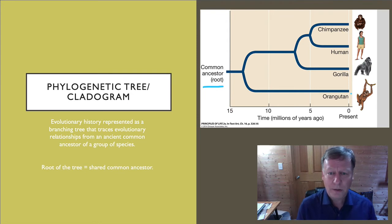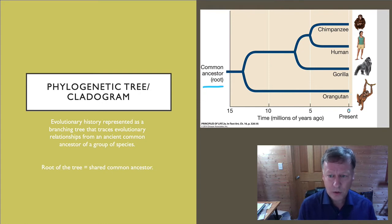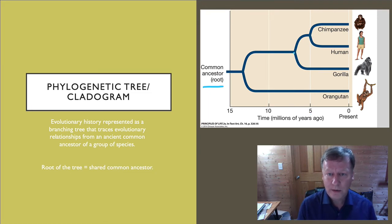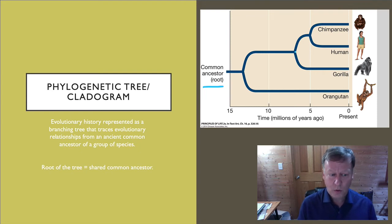Depending on the cladogram being shown, it might show you an explicit absolute timeline — for example, humans and chimpanzees split approximately five million years ago — or it might be more of a relative time. We know that humans and chimpanzees split more recently than they split from gorillas, but we might not be given the actual dates. So depending on the cladogram, you need to read it either as relative time or as absolute time.